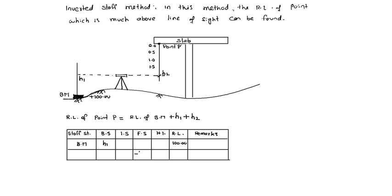Now height of instrument is 100 plus h1. And RL is height of instrument minus foresight, that is 100 plus h1 minus minus h2, which equals 100 plus h1 plus h2.